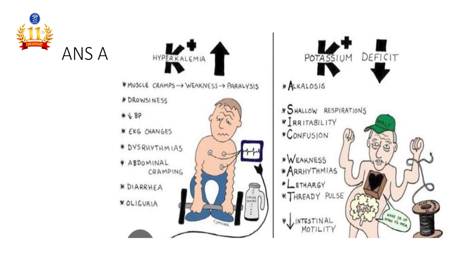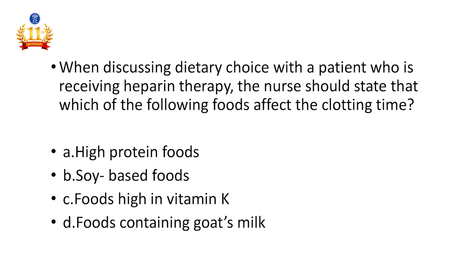Sixth question: When discussing dietary choices with a patient receiving heparin therapy, the nurse should state that which of the following foods affects clotting? High protein foods, soy-based foods, foods high in vitamin K, or food containing goat's milk. The answer is foods high in vitamin K. Vitamin K is a natural coagulant. Since heparin is used as an anticoagulant, giving vitamin K-containing foods alongside heparin therapy creates an opposing action, so we avoid vitamin K-rich foods with heparin therapy.